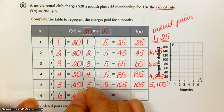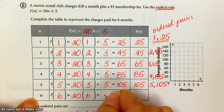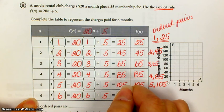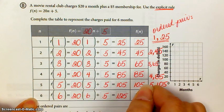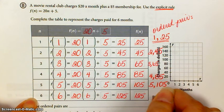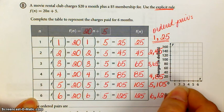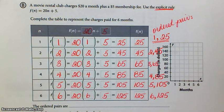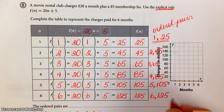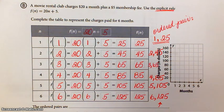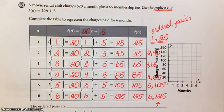And then 6, 6 comma 125. So those are your ordered pairs. I'm not going to write them down here again because I just wrote them over here on the side. And then you just plot those.